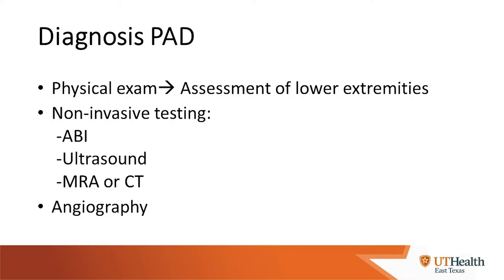For diagnosis of peripheral artery disease, we start with a physical exam assessing the lower extremities for signs of ulceration, gangrene, decreased pulses, hair loss, and shiny skin. Objective testing includes the ankle-brachial index (ABI), duplex arterial ultrasound of the leg arteries, magnetic resonance angiography or CT angiography to look for blockages, and ultimately invasive angiography, which is performed in the cath lab to identify exactly where the blockage is.